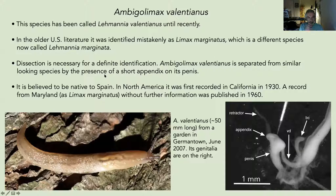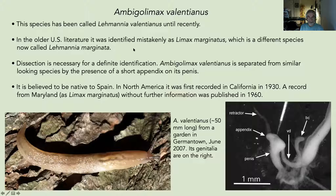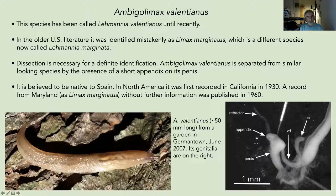One more slug: Ambigolimax valentianus, which has a confusing taxonomic history — it used to be identified as Limax marginatus, but that was apparently a misidentification. It is now called Ambigolimax valentianus. Animal taxonomy can be quite confusing and names constantly change — you just get used to it after a while.